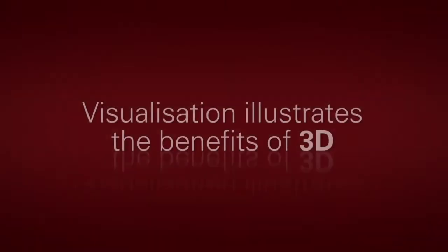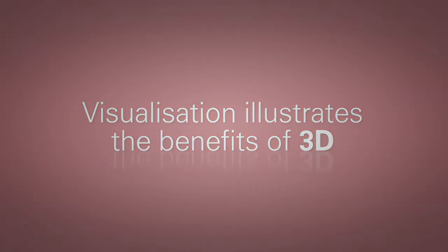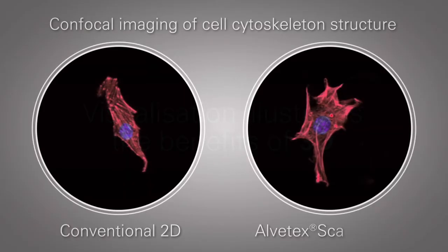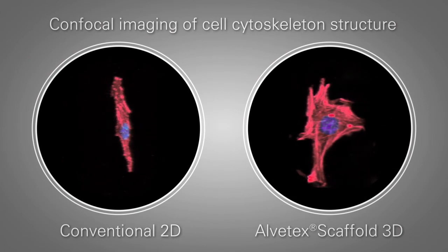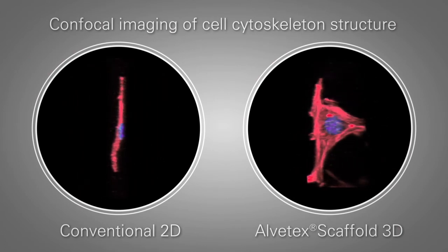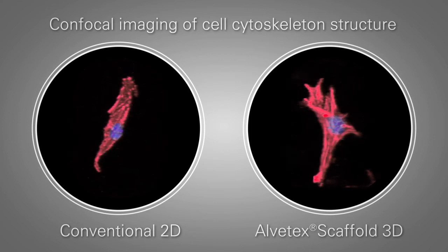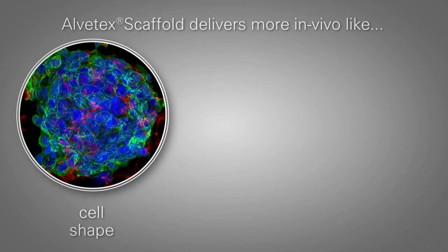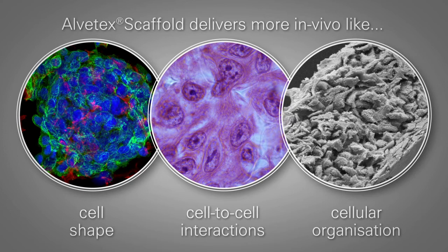This visualization illustrates the benefits of 3D. Confocal imaging of cell cytoskeleton structure — on the left, conventional 2D, and on the right, Alvatec Scaffold 3D. Alvatec Scaffold delivers more in vivo-like cell shape, cell-to-cell interactions, and cellular organization.